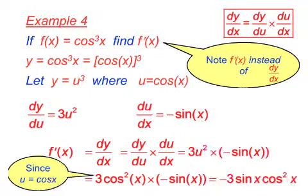Now let's do the chain rule, substituting, and substituting back for u. We get an answer of minus 3 sin x cos squared x.